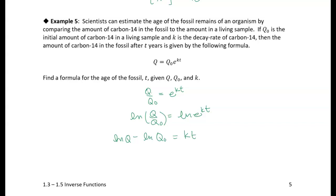So now we want a function for T. That's pretty simple at this point, so we just need to divide both sides by K. And I'm going to flip it around. So I have T on the left-hand side here. So we have the natural log of Q minus the natural log of Q0 all over K. All right, so now I have a function for T, the time elapsed given the amount of carbon-14 left in a sample.